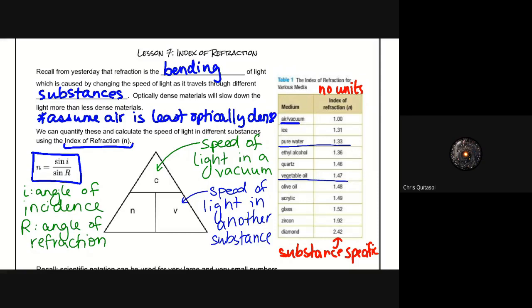Optically dense materials will slow down the light more than less dense materials. Assume air is the least optically dense material that we're going to encounter. When you get to higher level physics, you can start to look at vacuums and what those provide. But for now, we're just going to use air as the lowest index of refraction, meaning it is the least dense, meaning that light will travel through it very quickly.